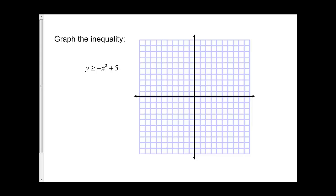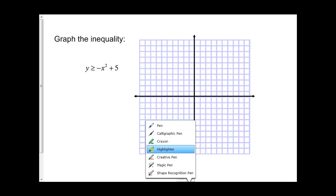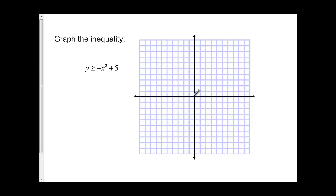Another example, here I have negative x squared plus 5. I'm going to start my equation at plus 5. It's just a negative 1, so over 1, down 1. Over 2, down 4. Over 3, down 9. And then I can draw my parabola.